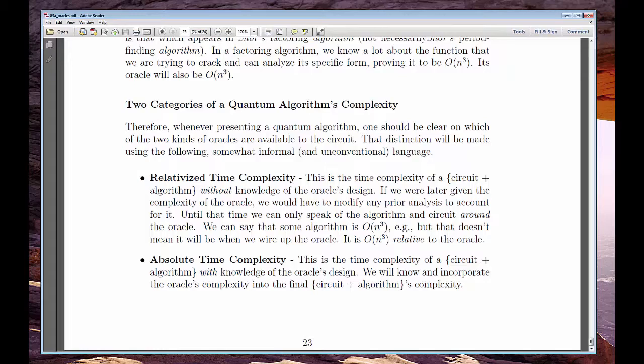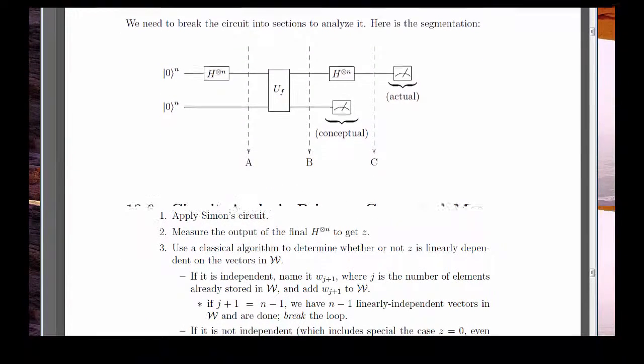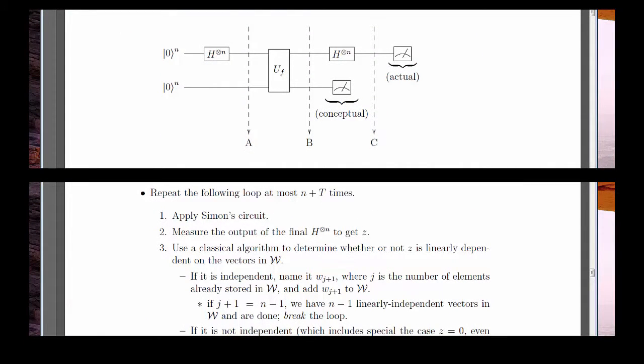When we build a quantum circuit and its accompanying algorithm, we'll be counting both the number of gates needed and the steps used to get the answer. That'll account for the computational complexity, right? Wrong.